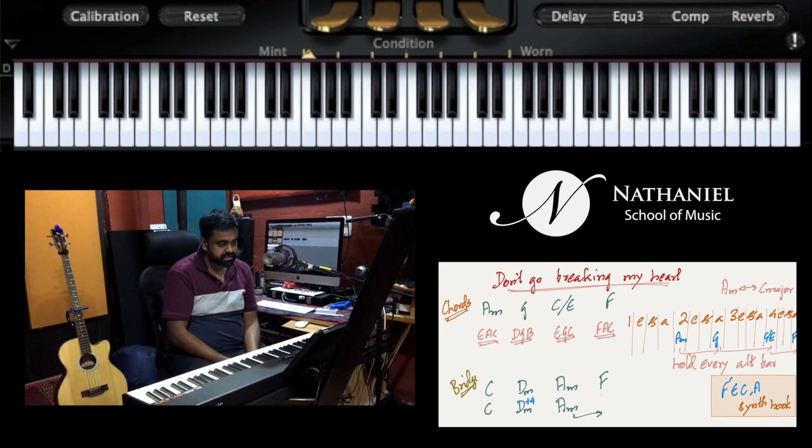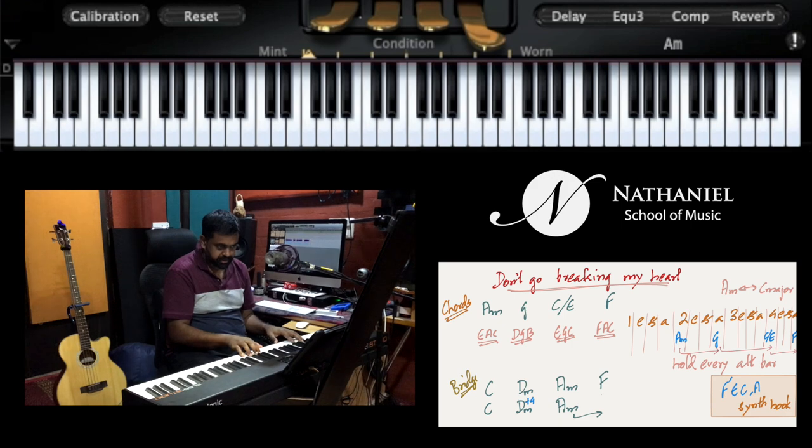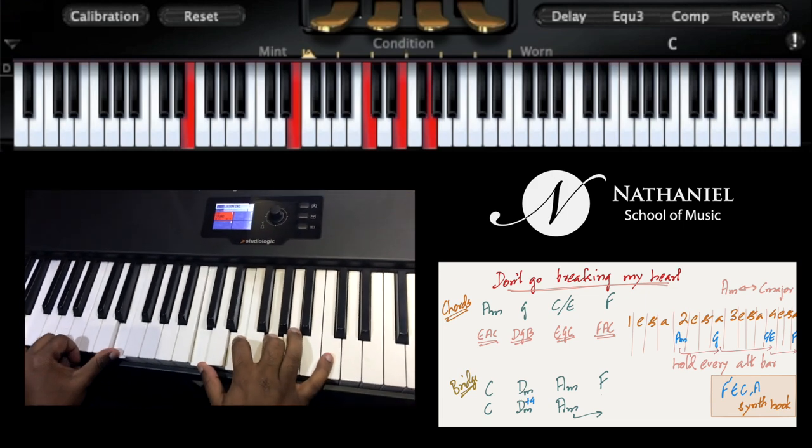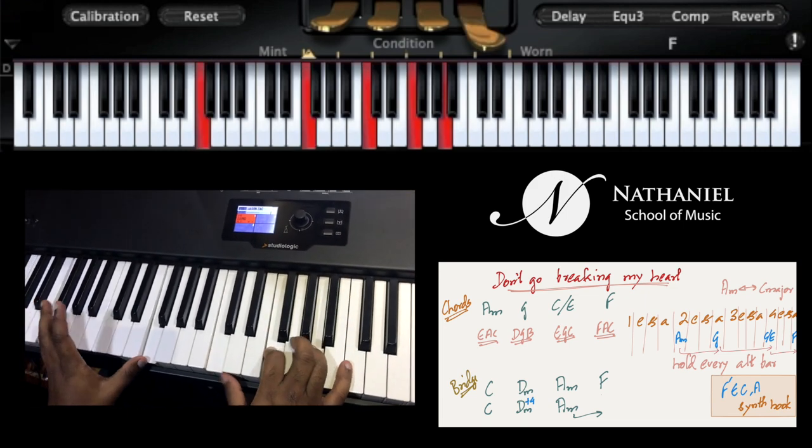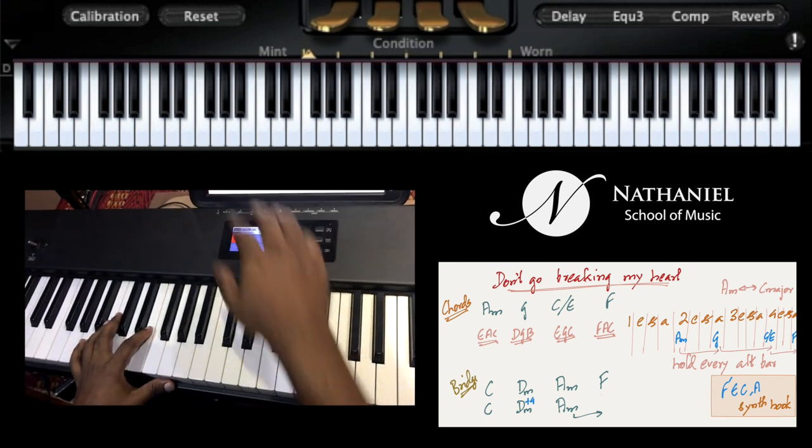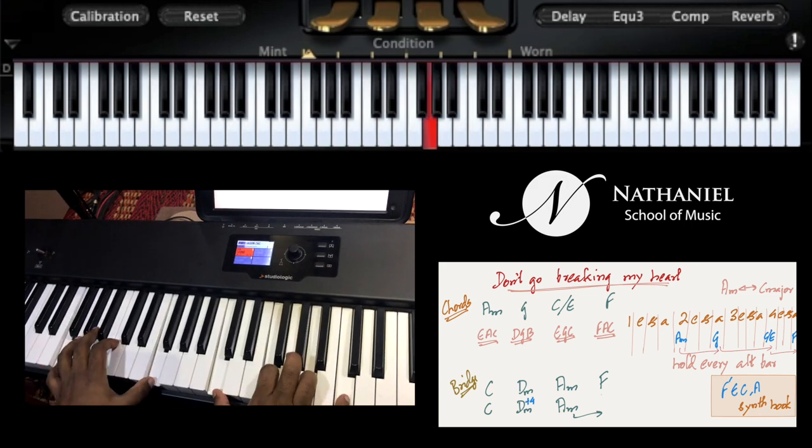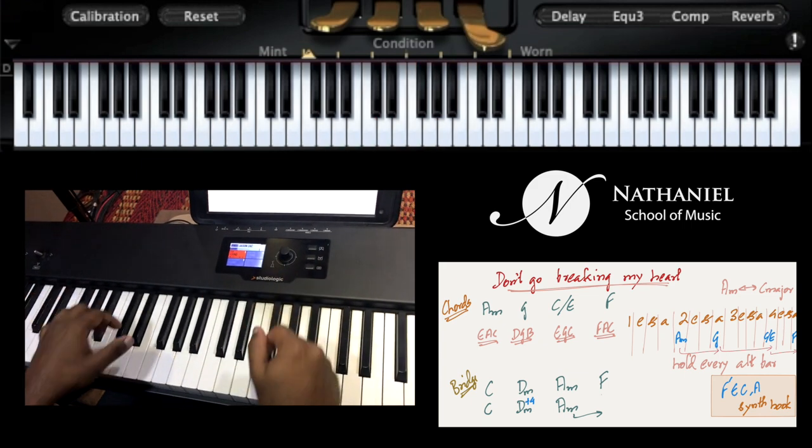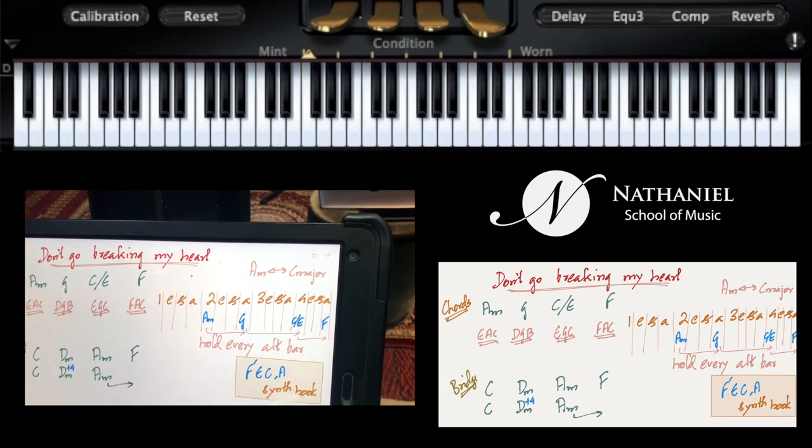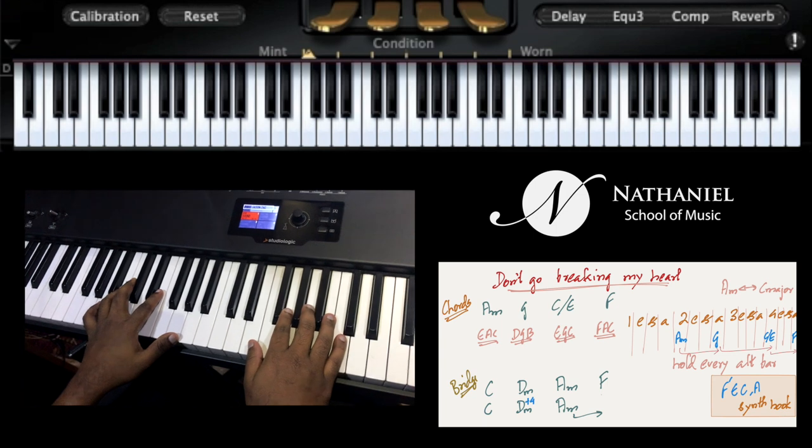Let's first look at the chords: A minor, G major, C over E, and then F. What happens is in the span of one bar you need to play all these four chords. One e and... breaking my heart, breaking my heart. So then you hold on to this F chord for an entire bar. For an entire bar there's nothing. Let me just show that to you again: one, one e and a two.